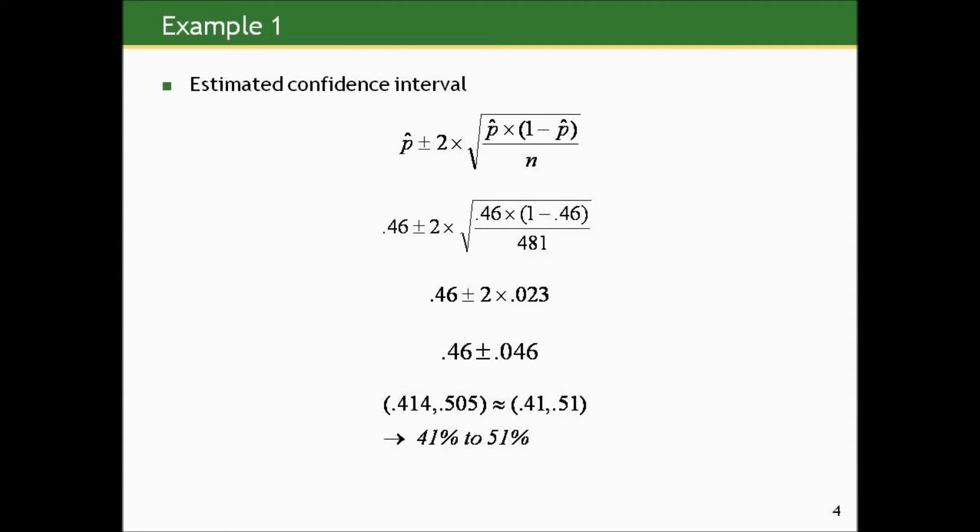So by going through the mathematics to get a confidence interval, and you can follow the math on the screen here and try it on your own if you want, we get a confidence interval of 41% to 51%. So we estimated that 46% of dialysis patients in France had national health insurance. And after accounting for the uncertainty that we're dealing with a random sample of only 481 persons, we put an interval for the true proportion of nationally insured dialysis patients between 41% and 51%.